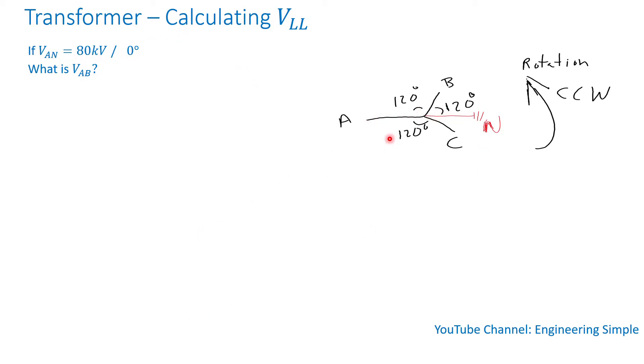So we have ABC, AN is neutral, and we want to calculate VAB, which is the line-to-line voltage. We're assuming counterclockwise rotation. If I take the same sketch here, you see we have BN.